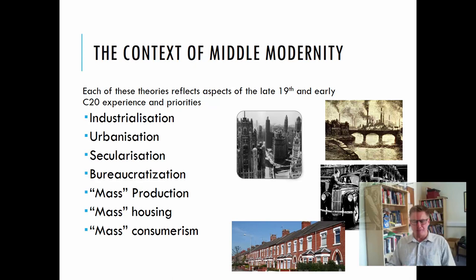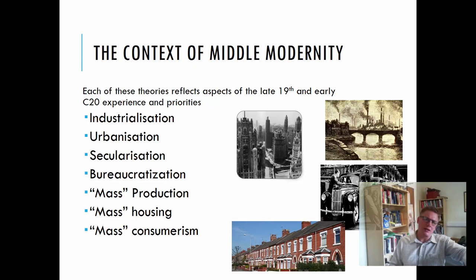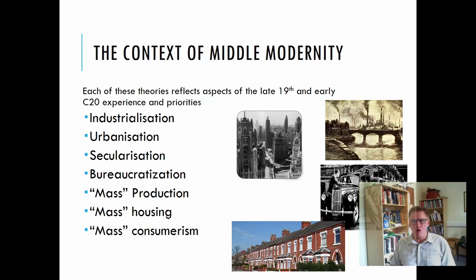Also around this time, people's beliefs began to change. There wasn't the same engagement in religious practice as there had been previously. We also had the rise of science as an alternative form of belief system, and gradually people became more secular. Furthermore, there was the rise of what we might term bureaucratization — the emergence of large systems of administration. So you had many more censuses taking place. The earliest census you can usually find is 1811 in the UK; before that, information was recorded in parish records. From 1811 onwards, there were government censuses, records of people's work, and bureaucracies grew up. Mass education systems emerged in the middle of the 19th century.